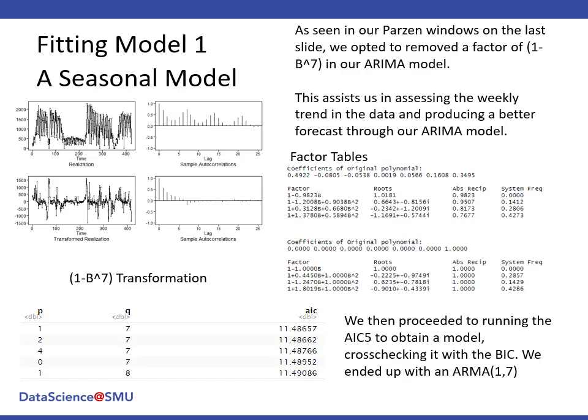As seen in the partisan window on the last slide, we opted to remove a factor of 1 minus B to the 7th. On our first model, we are checking for a weekly trend and you can see in the factor tables here, the original factor of our data is on top and it matches the factor table of 7 down to the bottom. So after we did that, you can see that we ended up with some fairly white noise after it was over.